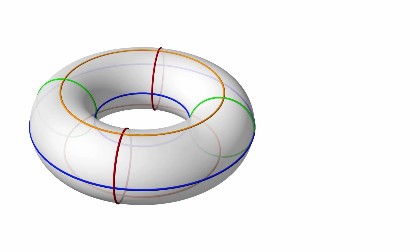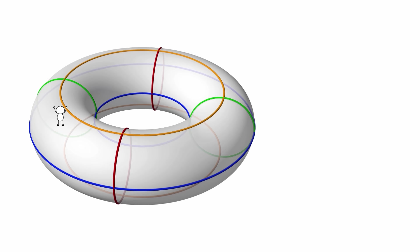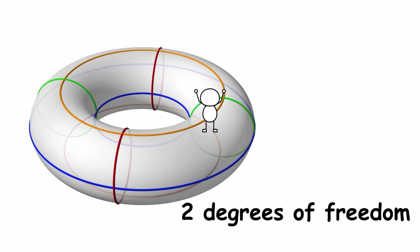Now, let's imagine that the torus is actually a space. We will consider a creature living on the torus. Just as we can never leave our own space, this creature cannot ever leave the torus. However, it is free to move along the torus, and it has two degrees of freedom to do so.